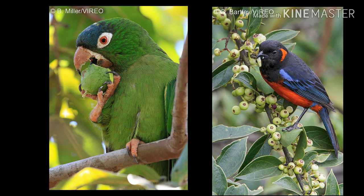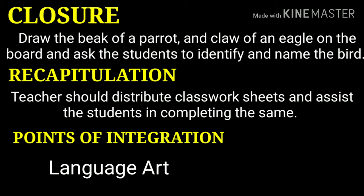After the explanation comes the closure. The teacher should draw the beak of a parrot and the claw of an eagle on the blackboard and ask students to identify and name the birds. The teacher may also draw a complete picture of a parrot, eagle, or any other familiar bird and discuss about it. Then comes the recapitulation — the teacher should distribute class workbook sheets to students and assist them in completing the same.